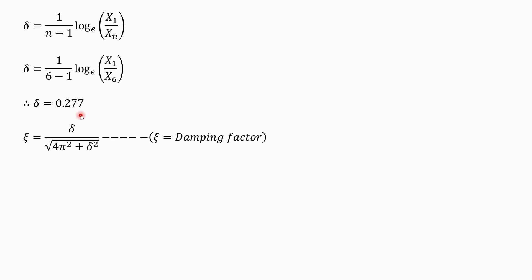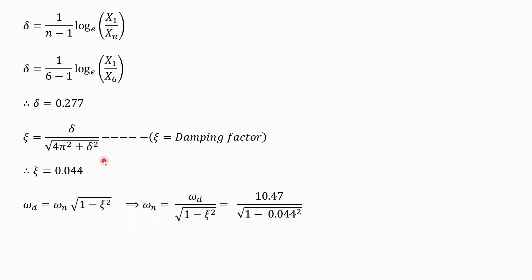Now, zeta is the damping factor. Substituting the value of delta — that is 0.277 — divided by the square root of 4π² plus 0.277², the value of zeta comes out to be 0.044.